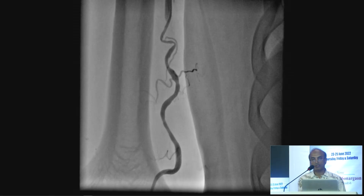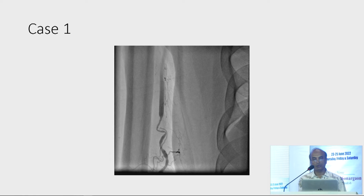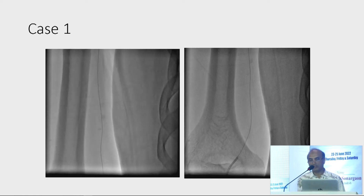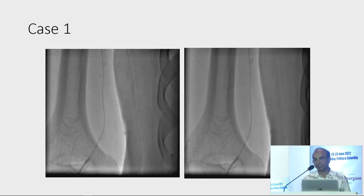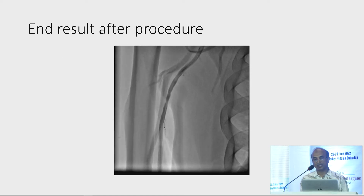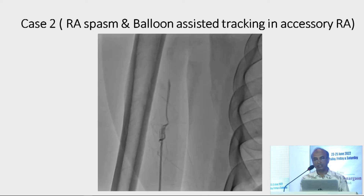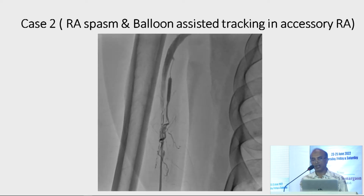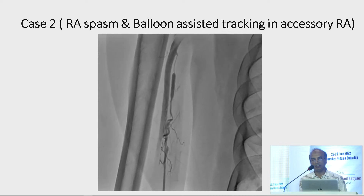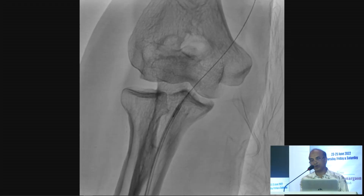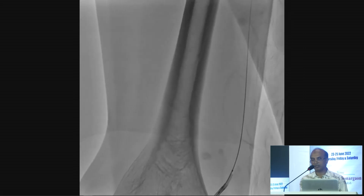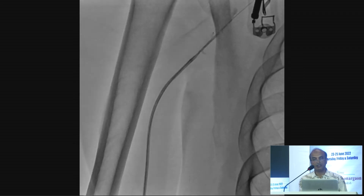This is a case of radial artery spasm — we took a PTCI wire, negotiated it, and then advanced the catheter. This is after the procedure: there is some spasm but no dissection. This is another case — an accessory radial artery arising from a higher origin in the arm, with a severe spasm. We crossed through using balloon-assisted tracking as mentioned by Dr. Noor Alam, and after the procedure the result was satisfactory.